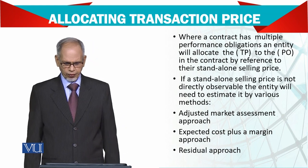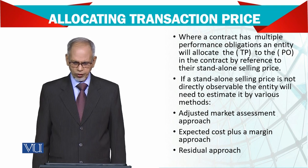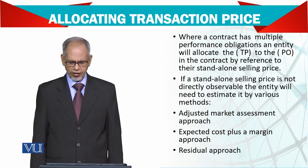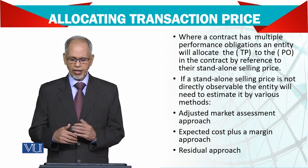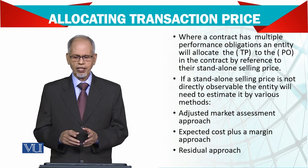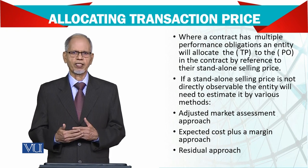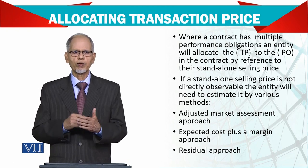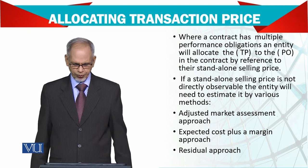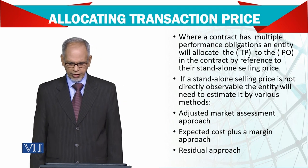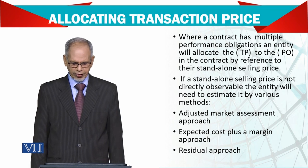When a contract has multiple performance obligations, an entity will allocate the transaction price to each performance obligation in the contract by reference to the standalone selling price. I will give you an example in the numerical — it happens sometimes that there are multiple performance obligations, not just one. You do this, this, and this, and accordingly you pick the price for each stage of performance. If the standalone selling price is not directly observable, the entity will need to estimate it by various methods.